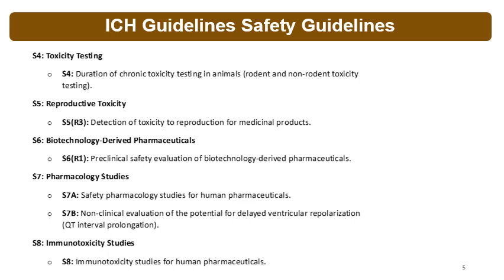S7 covers pharmacology studies, with two sub-guidelines: S7a and S7b. S7a covers safety pharmacology studies for human pharmaceuticals. S7b addresses the non-clinical evaluation of the potential for delayed ventricular repolarization, i.e., QT interval prolongation.